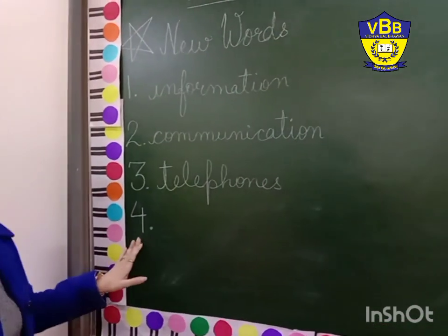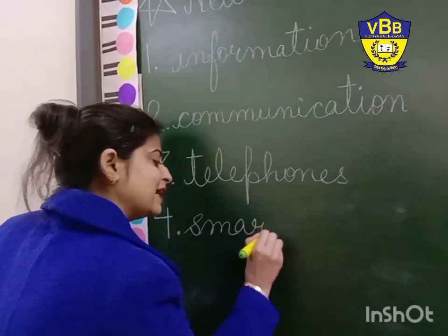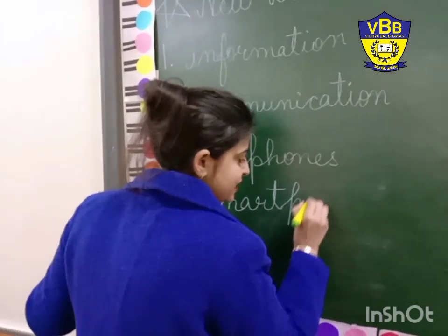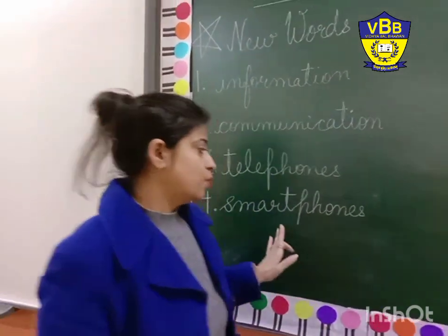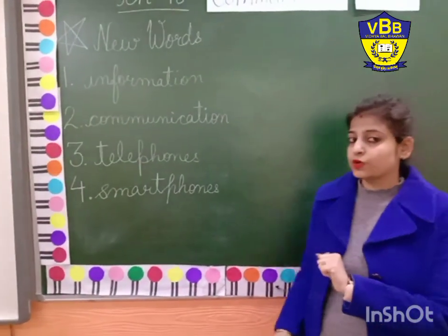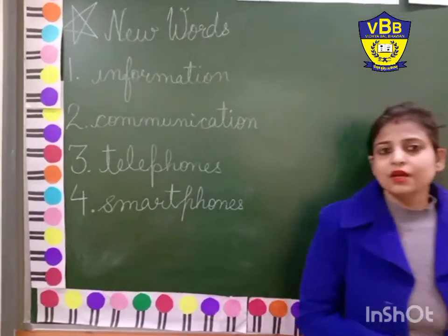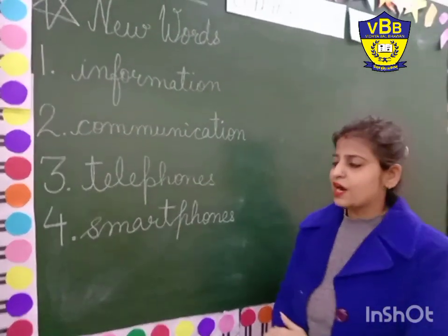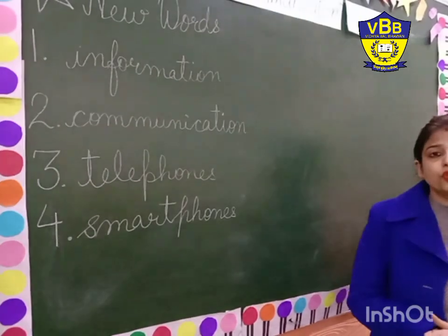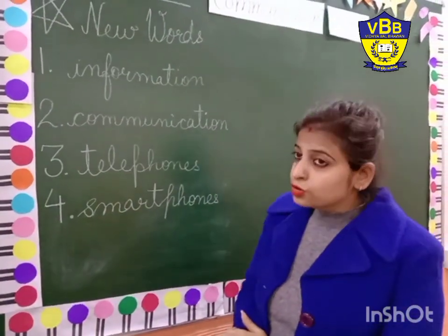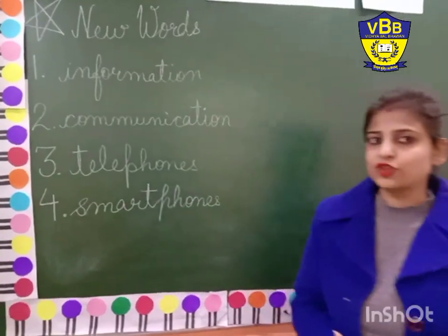Number 4 is smartphones — S-M-A-R-T-P-H-O-N-E-S. You all know what smartphones are because you are using them a lot — all day on your parents' phones. Your parents are complaining that you are playing games, using YouTube, using Google. Smartphones are very useful, but not for kids all the time. You have to study hard.